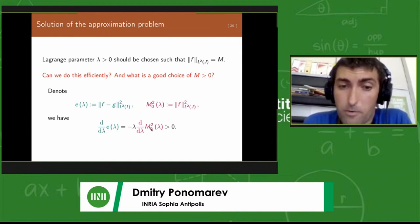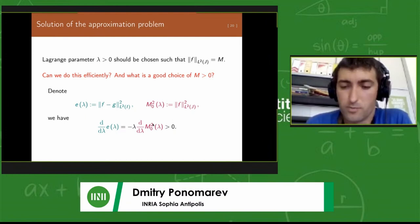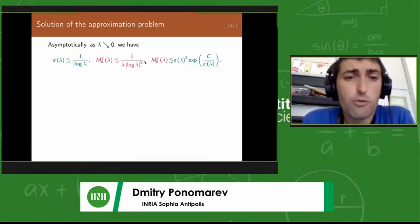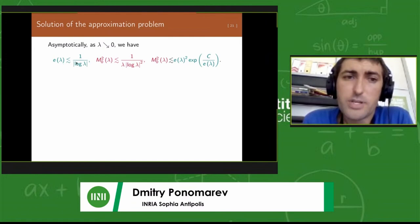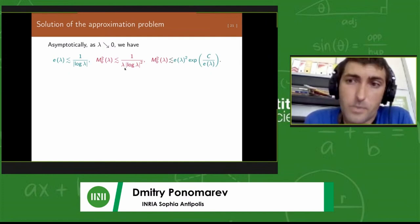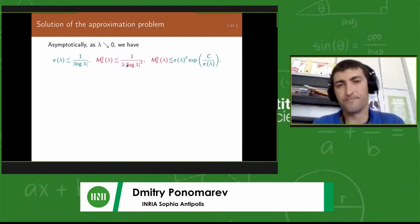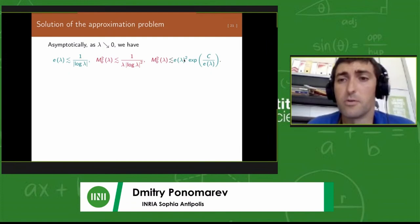The Lagrange parameter, just to remind you, should be chosen in such a way that the L2 norm of the solution on j should be equal to the prescribed value M. What is the good choice for a given M, how to choose lambda without solving the problem too many times, and what is the good choice of M?